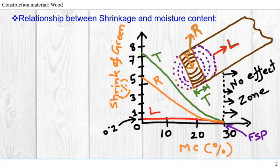Let's look at the typical diagram below. Wood can experience shrinkage in longitudinal direction, radial direction, or tangential direction.